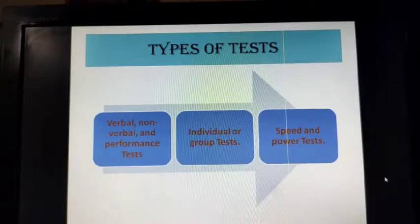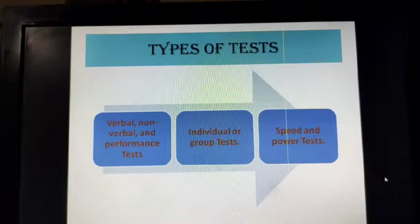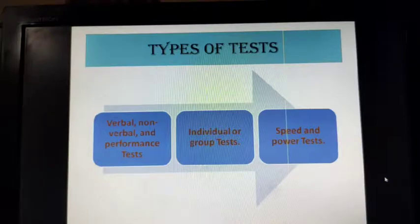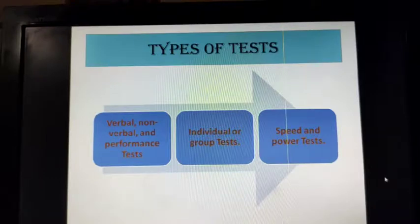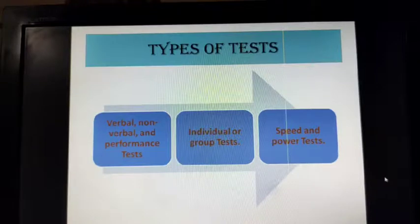In individual tests, the researcher administers the test face-to-face and remains seated before the subject. In group tests, the instructions about answering the items are written on the test, which the test taker reads and answers accordingly. Psychological tests are also divided into speed and power tests. In the speed test, there is a time limit within which the test taker is required to answer all the items. The power test, on the other hand, assesses the underlying ability of individuals by allowing them sufficient time with no time limit, and items are arranged in an increasing order of difficulty.